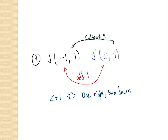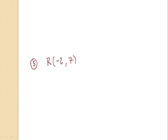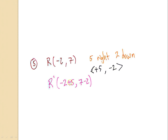Now that everyone has number four written on their paper, let's take a look at number five. Number five talks about point R, and point R is going to be translated five right and two down. In order to translate R, I need to take this description and turn it into a vector. If I go right, I'm adding, and if I go down, I'm subtracting. Go ahead and apply that vector. When we do, I'm really just adding five to X and subtracting two from Y. So negative two could be X and seven could be Y.